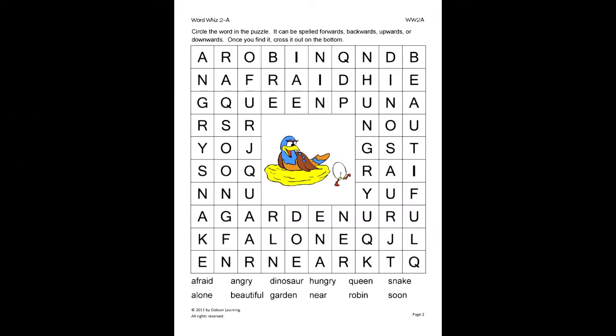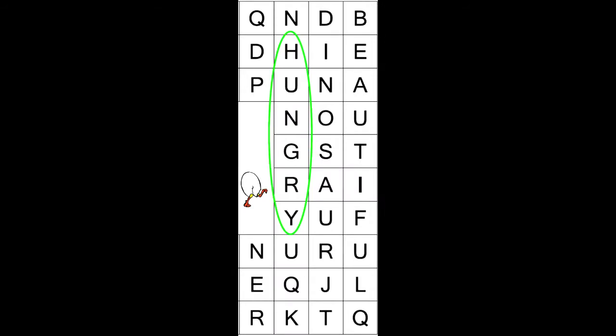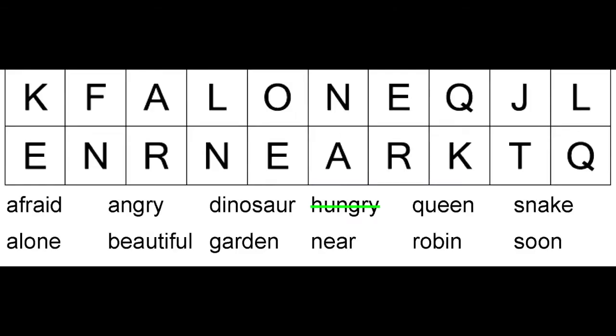For this activity, the student will circle the word in the puzzle. Remember, it can be spelled forward, backward, upwards, and downwards. If you find it, cross it out on the bottom. As an example, we will find the word hungry. So once we find it, we circle the word and cross it out in the word bank.